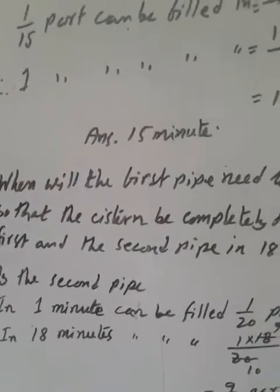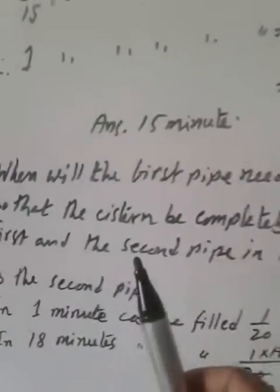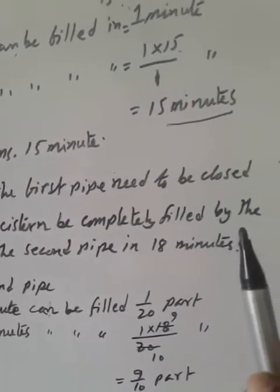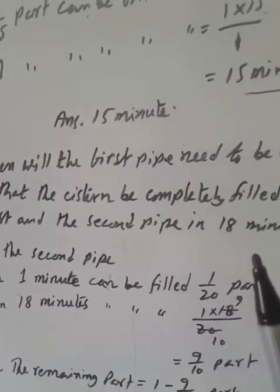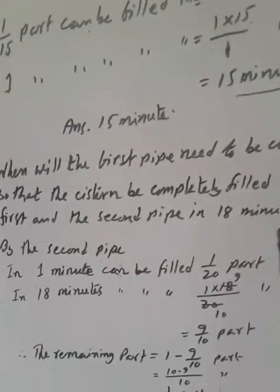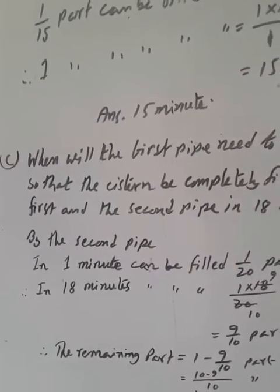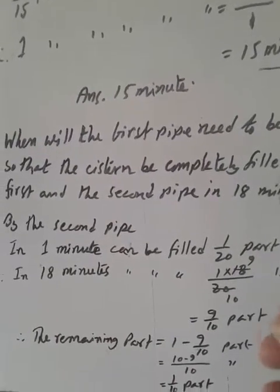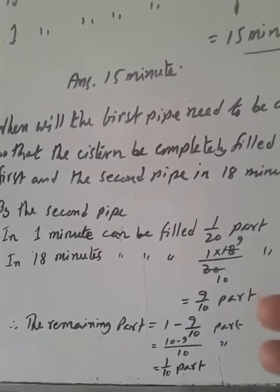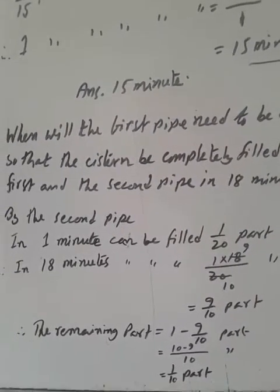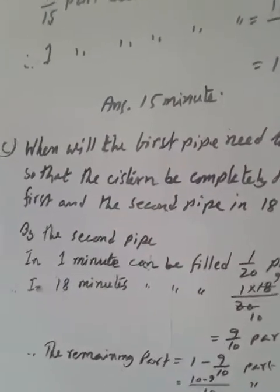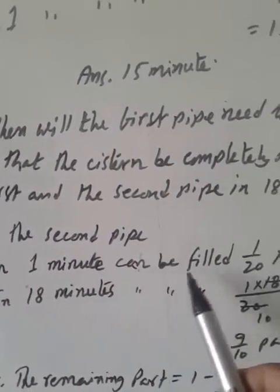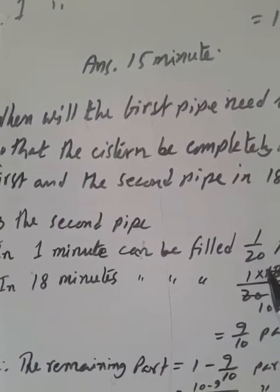The C question is: when will the first pipe need to be closed so that the cistern is completely filled by the first and second pipe in 18 minutes? It means we have to find when to close the first pipe so the system fills in 18 minutes. The second pipe will work for the full 18 minutes. From part B, the second pipe fills 1/20 part in one minute.